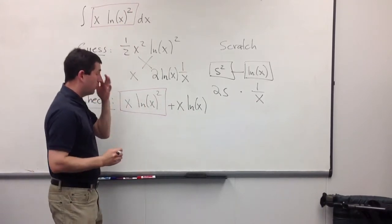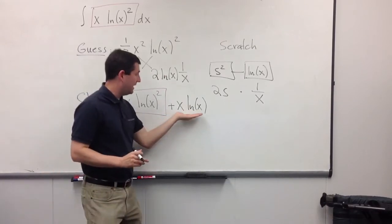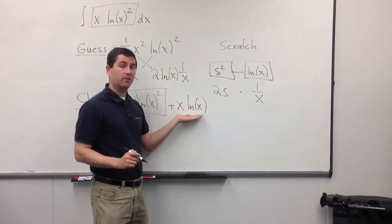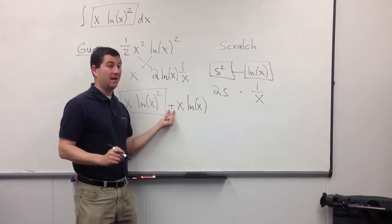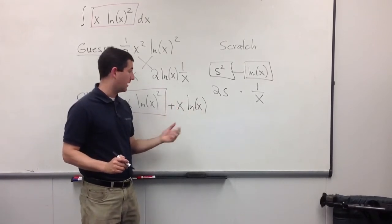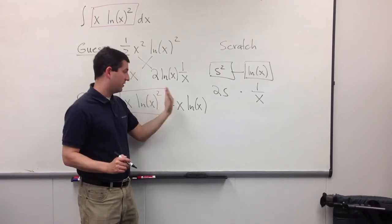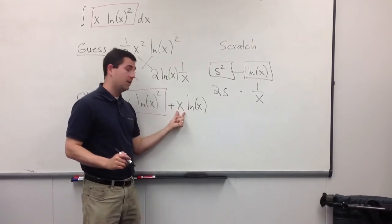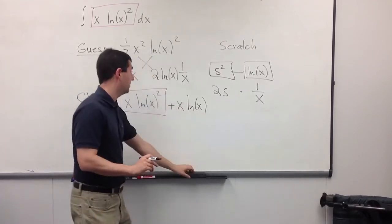We basically restart again. We say, okay, I need to find a function whose derivative is x ln of x. Or, well, really, we want minus it, because we want to be able to subtract it. Okay. Well, we're going to use the same idea. We take an anti-derivative for x, and we keep the ln of x exactly the way it is.